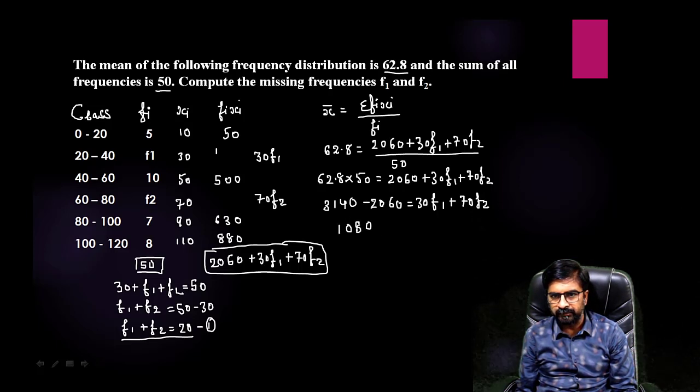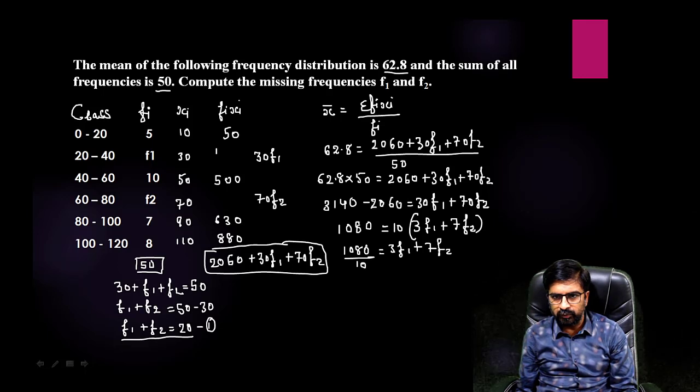Now take this 10 here in denominator, 1080 by 10 is equals to 3 f1 plus 7 f2. Now this will get cancelled. Now you can keep this value. You can write down this as f1 equals to, take this f2 on that side, 20 minus f2.